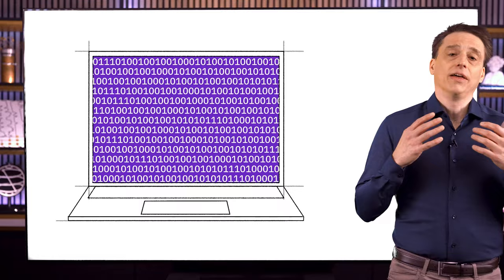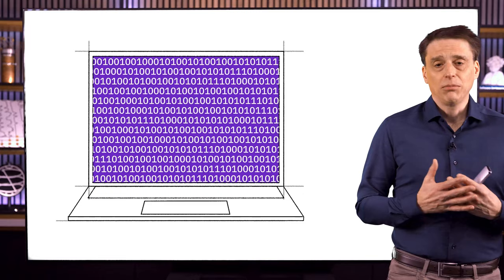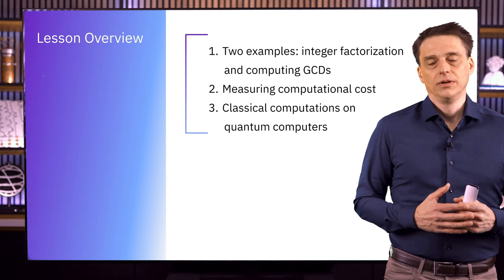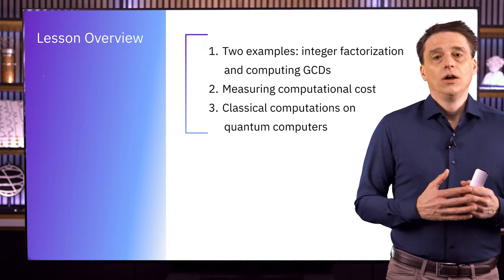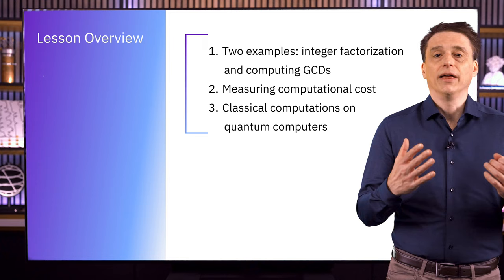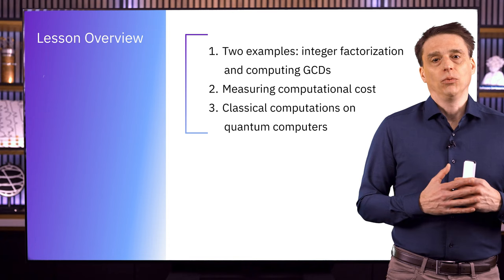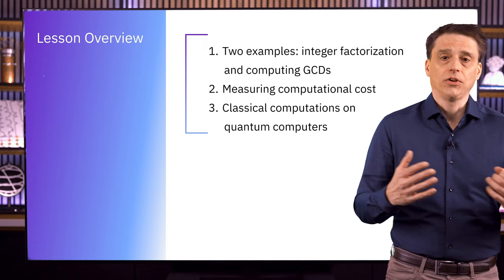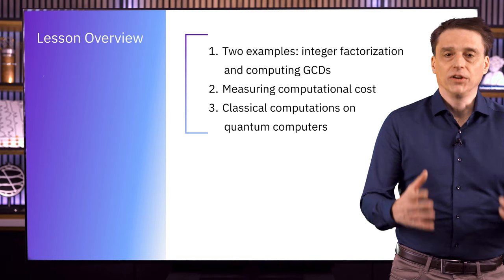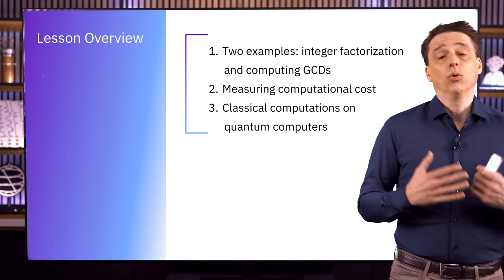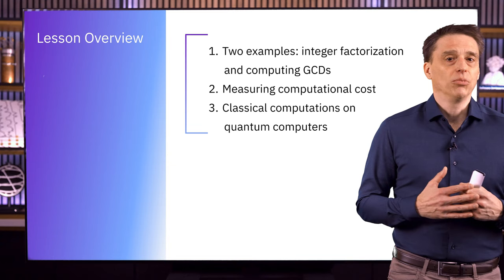The main purpose of this lesson is to establish a foundation from which we can do that. For much of the lesson, we're going to be focusing on computational cost — how difficult different computational tasks are, and how we can measure that difficulty. Roughly speaking, this translates to how long we have to wait for computations to finish, and ultimately which computational problems we can solve and which ones are beyond our reach. We're going to start with a couple of examples: integer factorization and computing greatest common divisors, or GCDs for short.